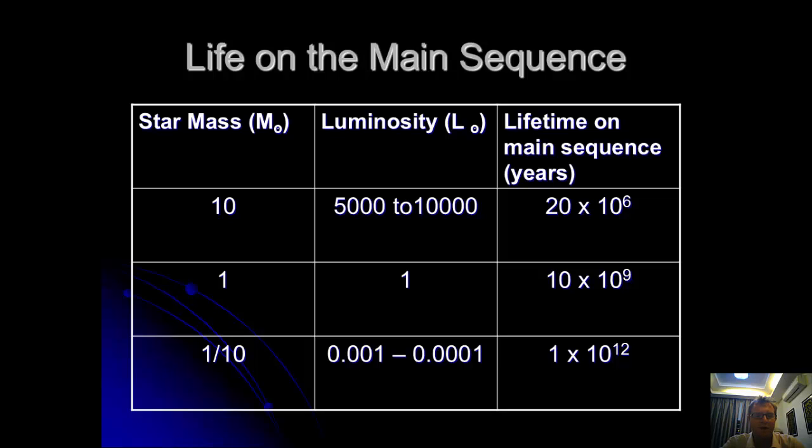If we use the example of a star which is ten times the mass of our Sun, it shines much, much brighter, up to ten thousand times brighter, yet the lifetime of the span is only about twenty times ten to the six years. So the more massive a star is, the brighter it shines, but the shorter its life. Undoubtedly there's an analogy towards rock stars today there.